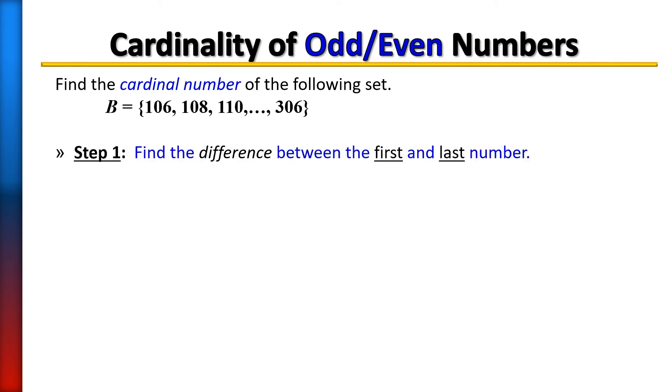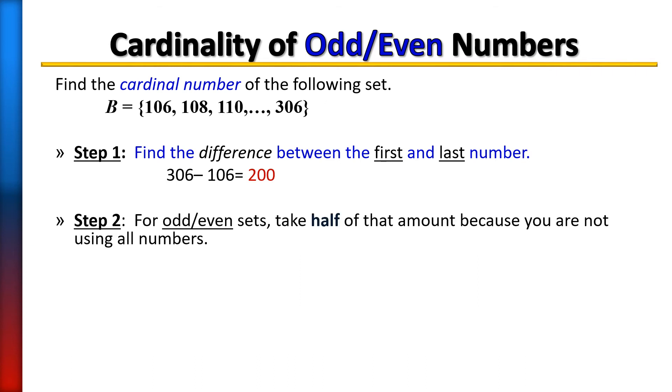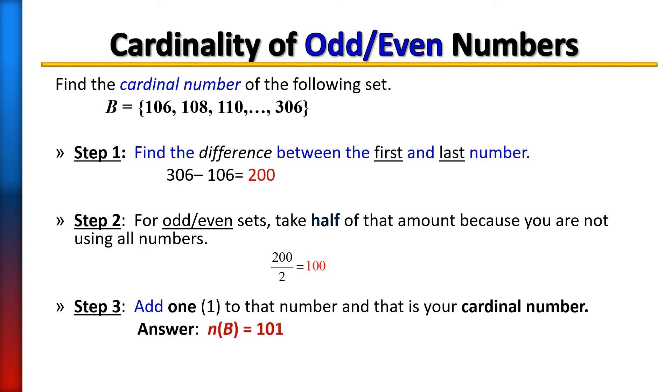So step one though is still the same thing. Take the first number, take the last number, subtract them. So when I subtract 306 take away 106, that gives me 200. Now step two, I'm not going to add one because I don't have all of my numbers. I have half of my numbers. So step two is to divide by two. In other words, what's half of 200? Half of 200 is 100. So 100 would be half of that. So then you add one, which means you have 101 numbers that are in set B. N of B equals 101.